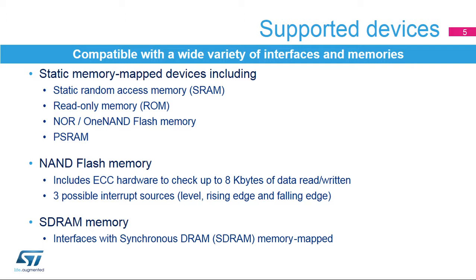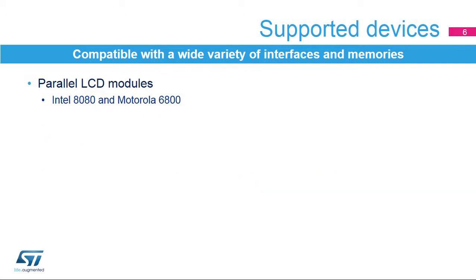The FMC also interfaces with synchronous DRAM or SDRAM memories. Furthermore, the FMC interfaces with parallel LCD modules, supporting the Intel 8080 and Motorola 6800 modes, and is flexible enough to adapt to various LCD interfaces.